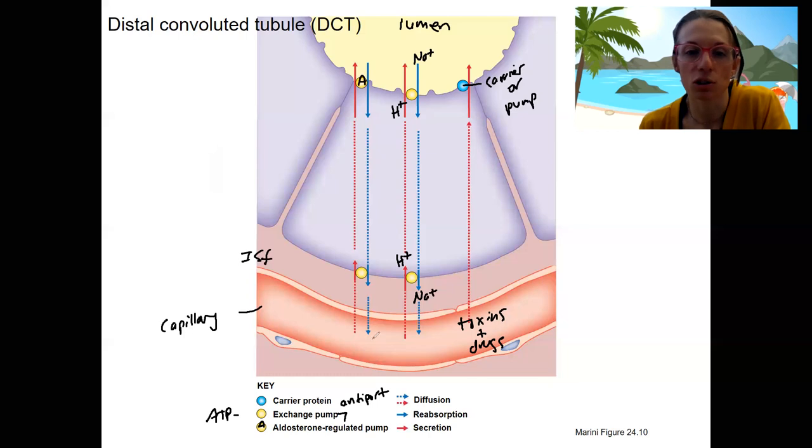Then we've got these aldosterone regulated pumps, meaning they are put into the membrane via stimulation from aldosterone. So I'll show you this in the next video. But we're still going to want to be reabsorbing sodium, secreting potassium. Aldosterone regulated pumps are exchanging potassium and sodium.